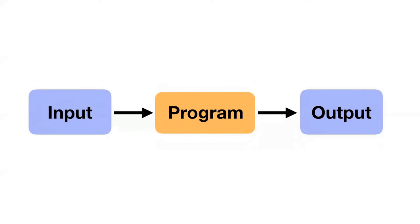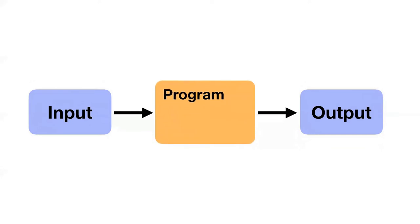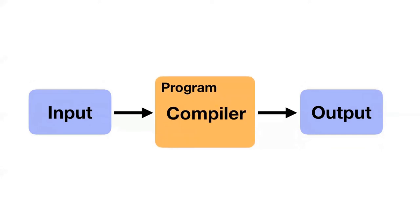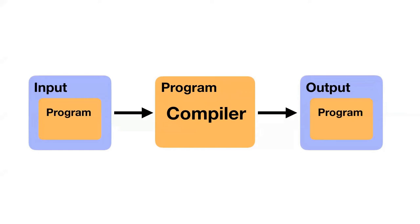Taking the general idea of a program here, and remembering that all programs have input and output — a compiler is just a program, but the thing that's special and fun about it is that the input and output are programs. So it starts to get a bit recursive right away. And I think this is where some of the reputation of compilers being hard to think about comes from, but it's also why they're fun and powerful.